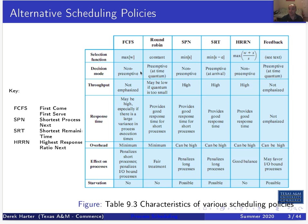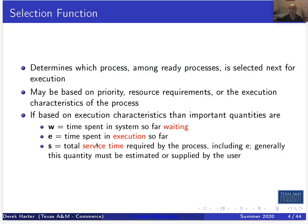This is a summary of all these scheduling policies covering how they work, their decision mode — preemptive versus non-preemptive — and their advantages and disadvantages. The selection function is basically the thing that defines how the policy decides which process to select next. Typically you can only select among processes that are ready to run. At any given time, some processes might be blocked waiting on I/O, or not in memory if you're using process swapping or suspension.